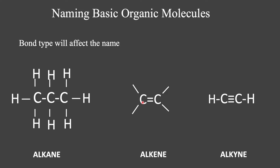This one is two carbons, so that is eth. And it is an alkene, so this is going to be ethene because of that double bonding. Let's look at this one — number one carbon is meth, number two carbons is eth, and this is an alkyne. So this is ethyne. And that's how you name, at the very basic level, these molecules.